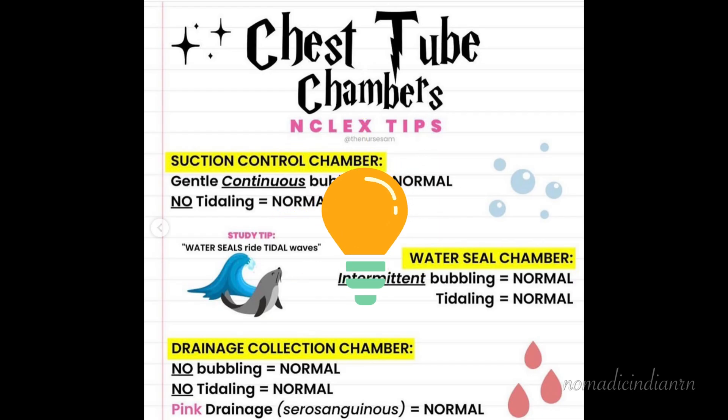Here are the NCLEX tips for each chest tube chamber. For suction control chamber: gentle continuous bubbling is normal, no tidaling is normal. For water seal chamber: intermittent bubbling is normal and tidaling is normal. For drainage collection chamber: no bubbling and no tidaling is normal. Pink drainage, also known as serosanguinous drainage, is normal.